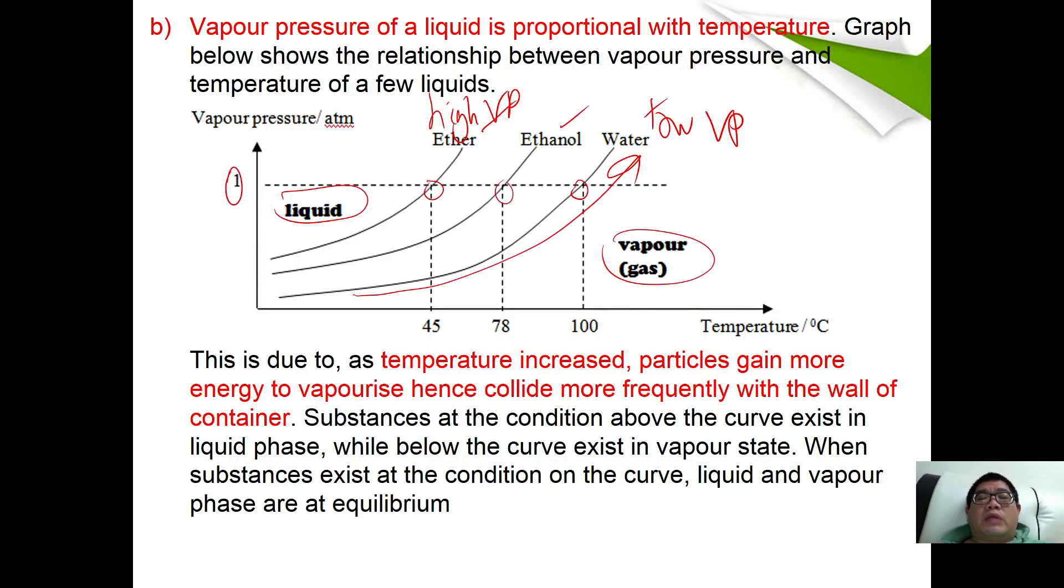As a conclusion, we can say that the higher the vapor pressure, the lower the boiling point of the substance involved.